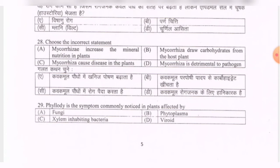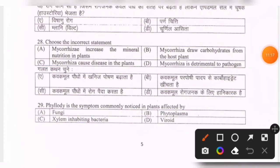Next question: choose the correct statement — mycorrhizae increase mineral nutrition in plants; mycorrhizae draw carbohydrates from the host plant; mycorrhizae cause disease in the plants; mycorrhizae is detrimental to pathogen. The correct option is C — mycorrhizae cause disease in the plants.